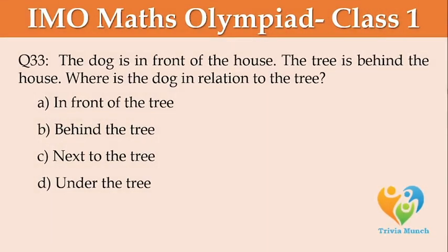The dog is in front of the house. The tree is behind the house. Where is the dog in relation to the tree? Option A: In front of the tree, Option B: Behind the tree, Option C: Next to the tree, Option D: Under the tree.